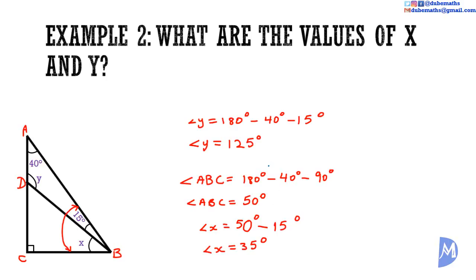There is a second way to find angle X. Angle Y is an exterior angle to triangle BCD. Thus, this exterior angle — which we now know to be 125 degrees — is equal to the opposite interior angles. So, 125 degrees is equal to 90 degrees plus X. Thus, X is equal to 125 minus 90. Angle X is equal to 35 degrees.